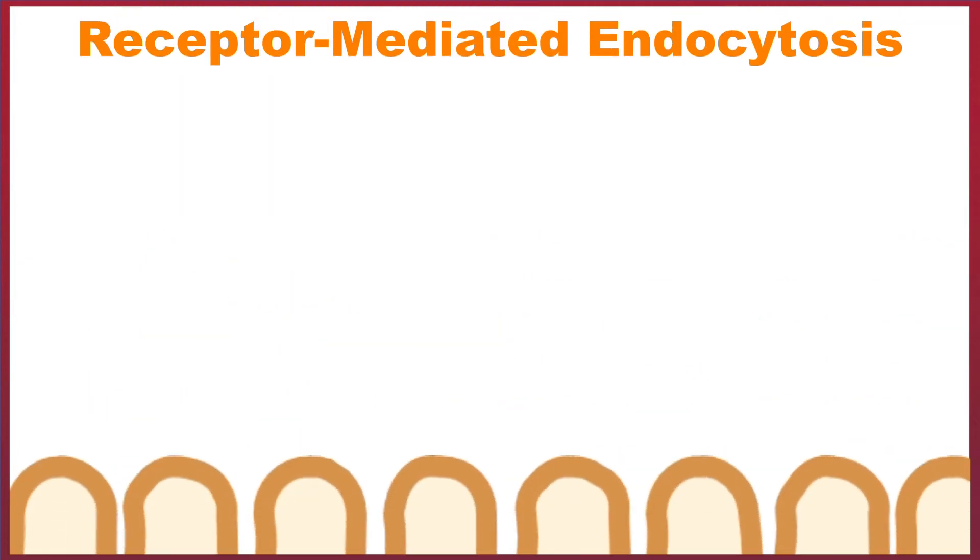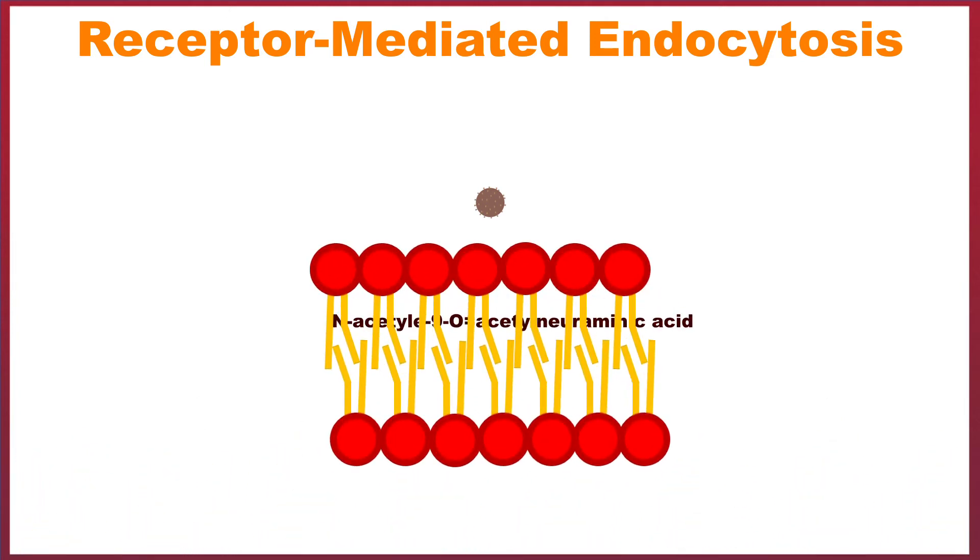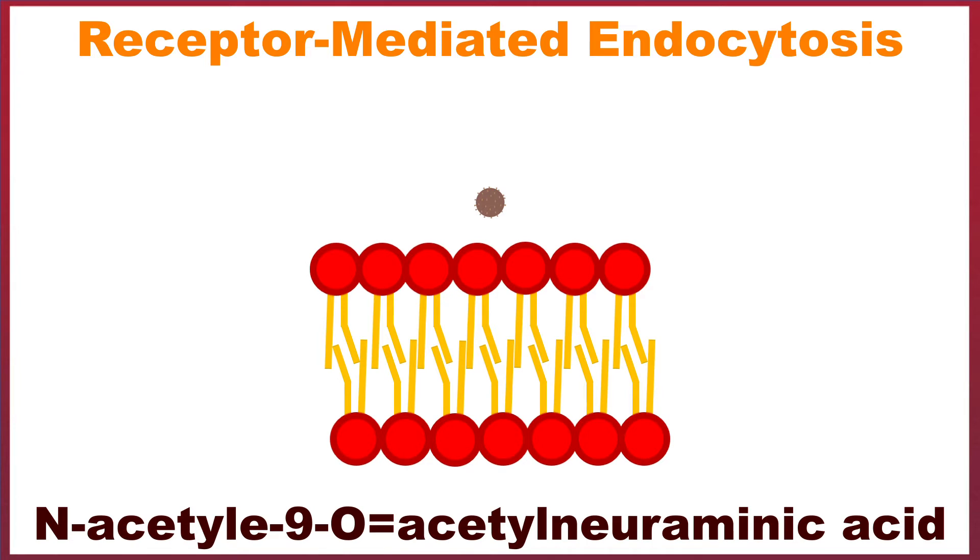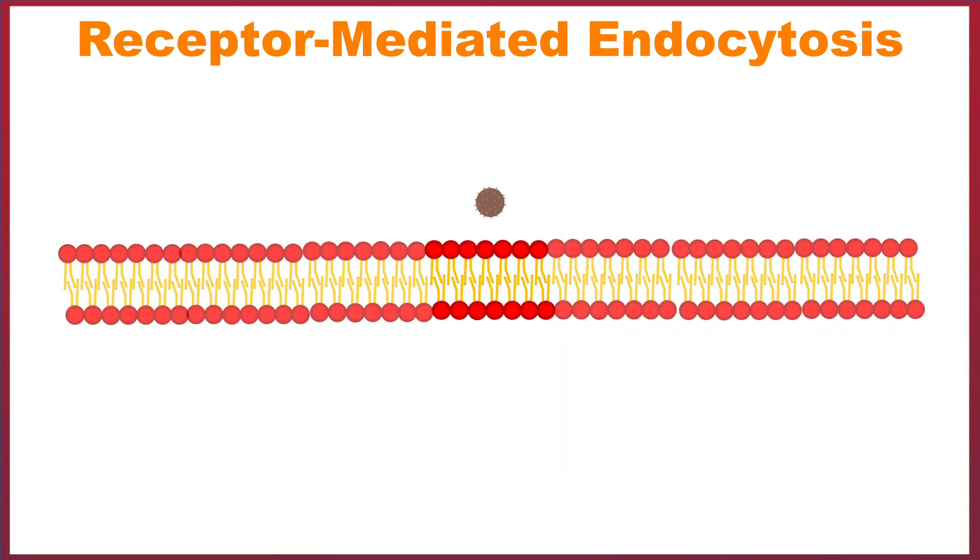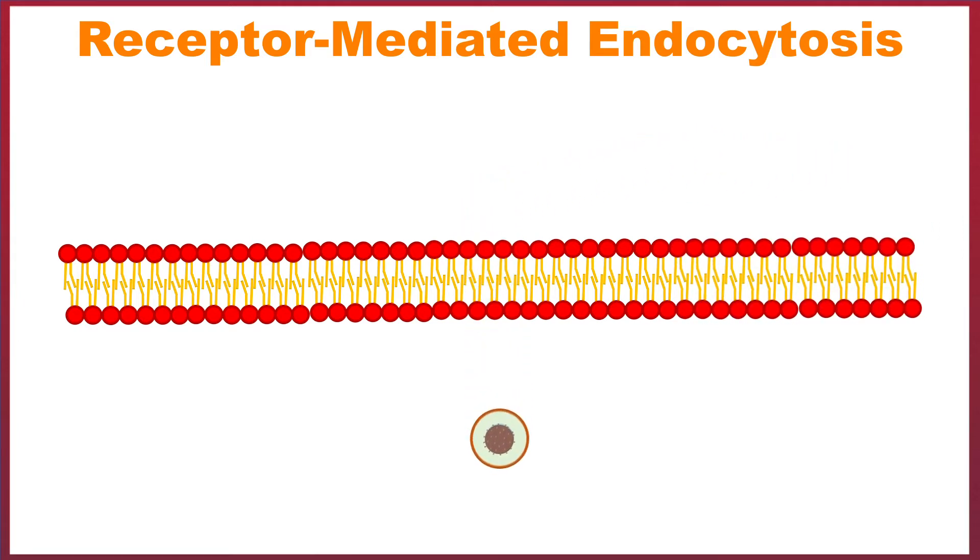During receptor-mediated endocytosis, the influenza virus binds to receptors containing the sialic acid, N-acetyl-9O-acetyl-neuraminic acid. Following this, the cell engulfs the virus by endocytosis. The virus is swallowed by an endosome, which brings the virus directly into the cell, bypassing the cell's plasma membrane.